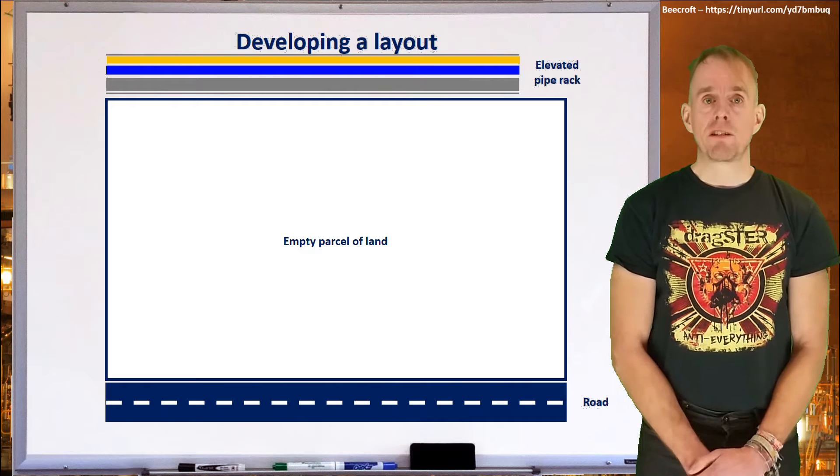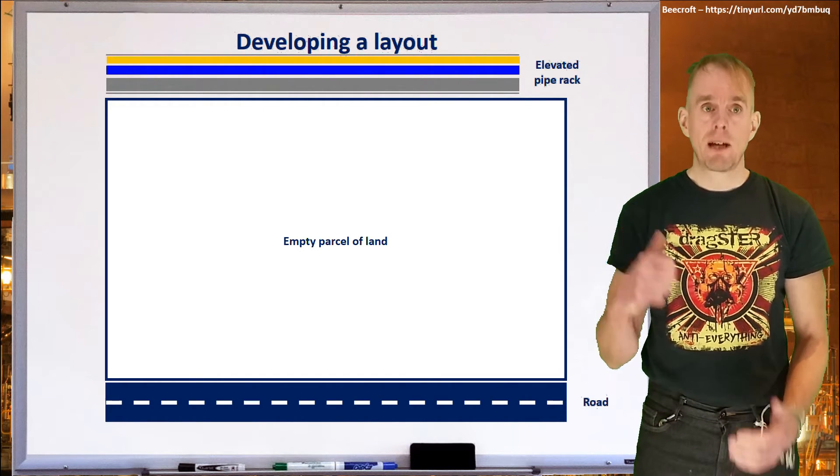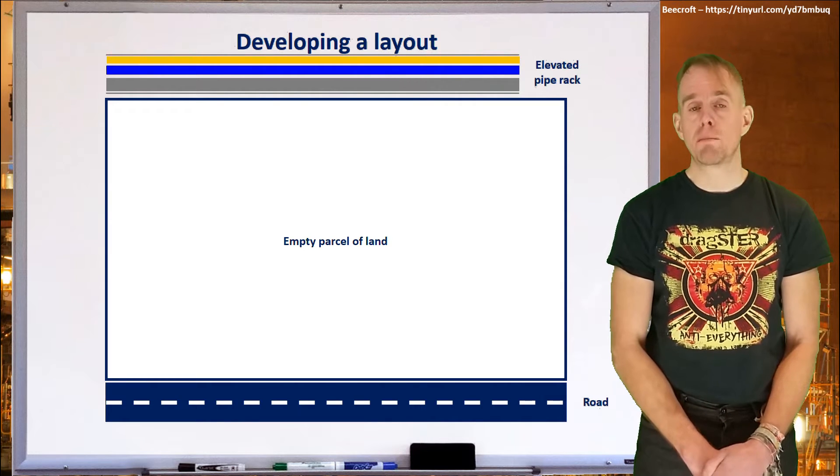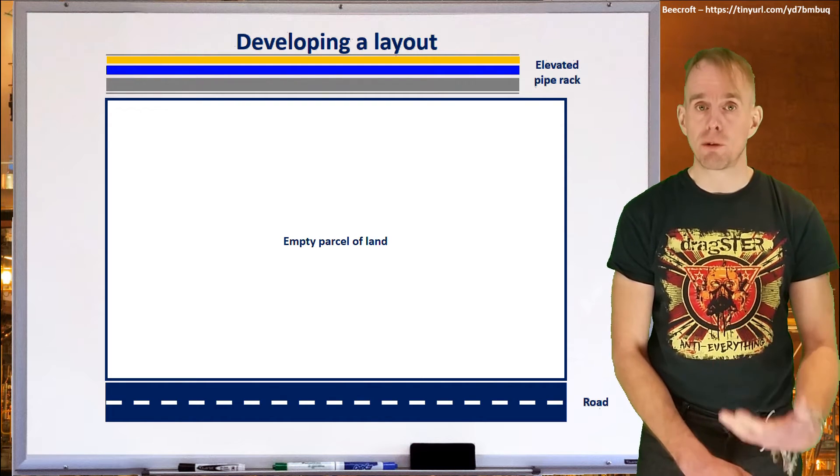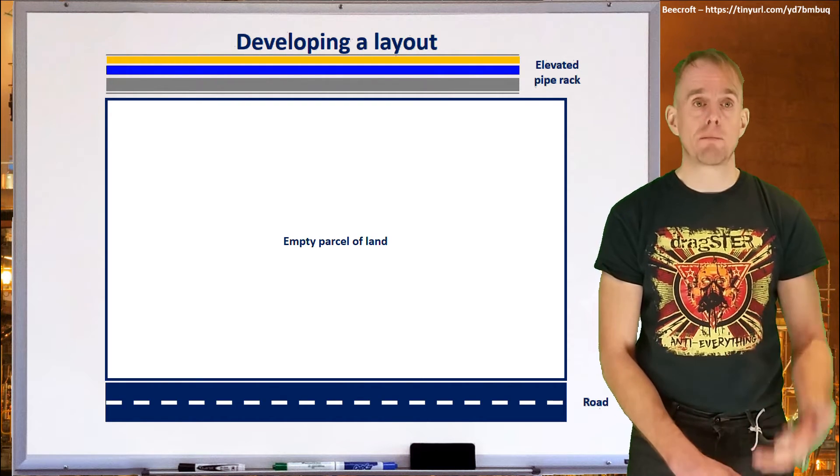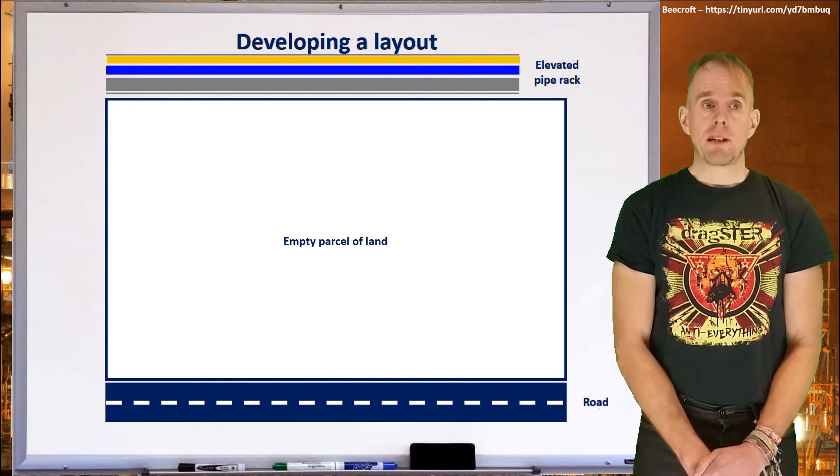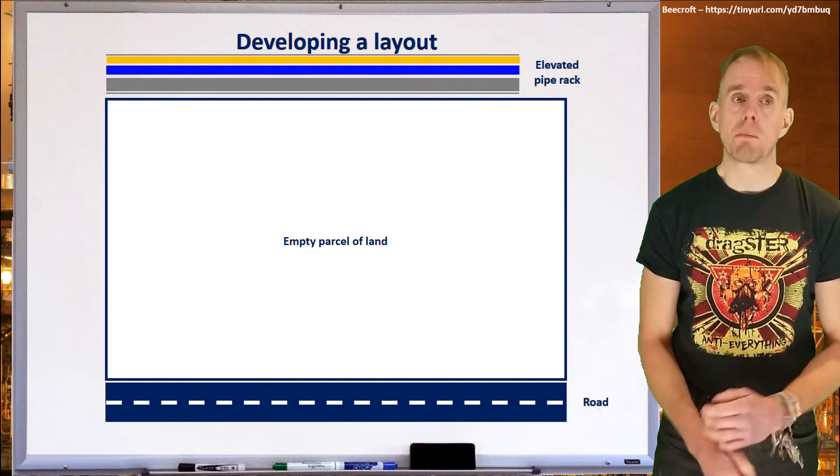So let's think about how we start to develop our layout. You're going to start with an empty parcel of land. This might have road access, and you might also have access to pipe racks. On these pipe racks will be pipes containing some of your feedstocks, and potentially some of the piping systems into which you can put your finished products. So the first thing to think is how you're going to subdivide what's potentially a large piece of land into manageable plots.